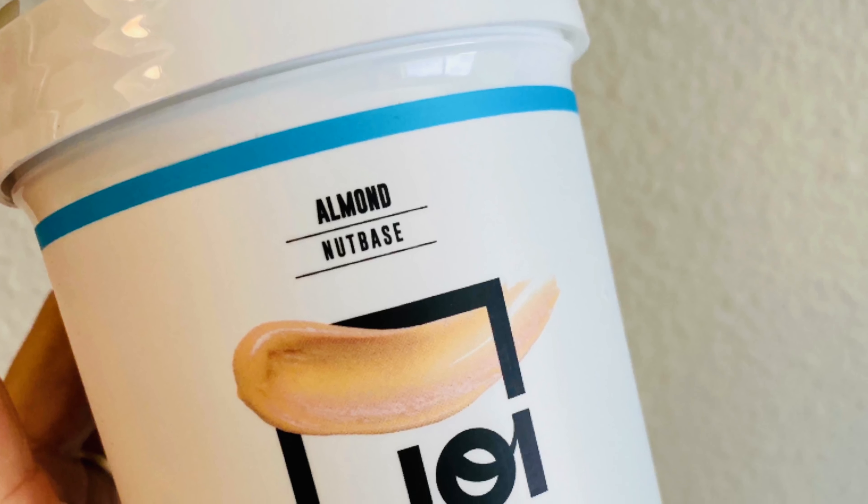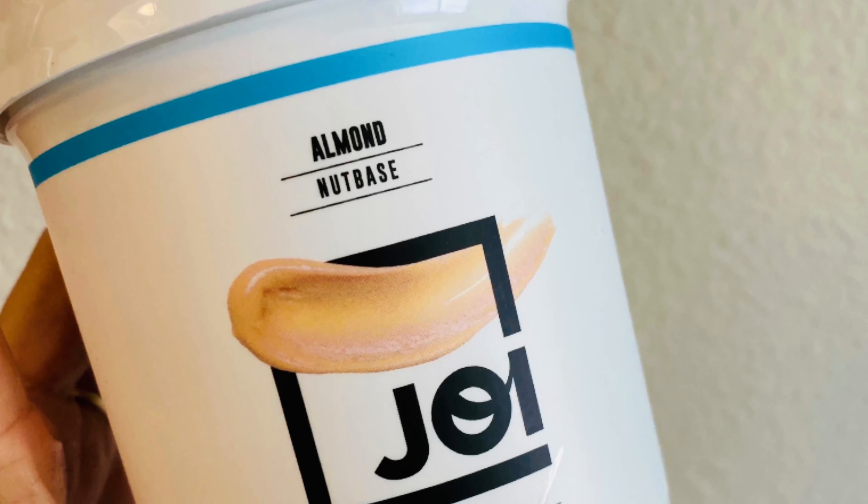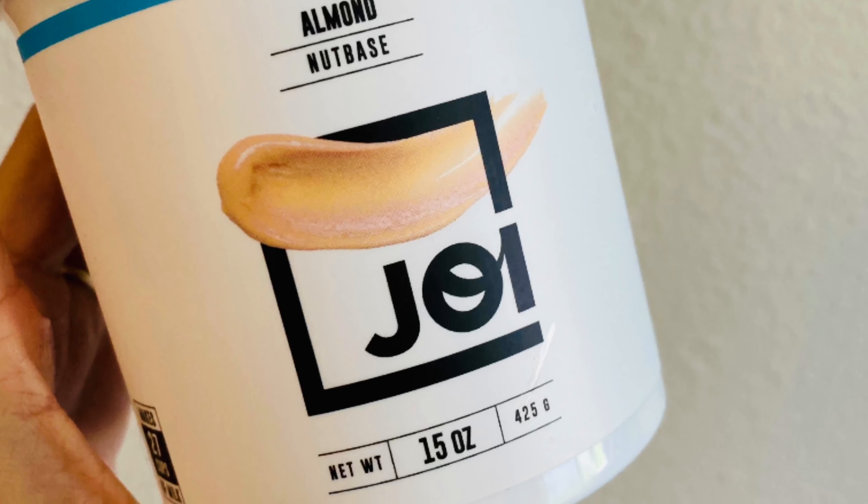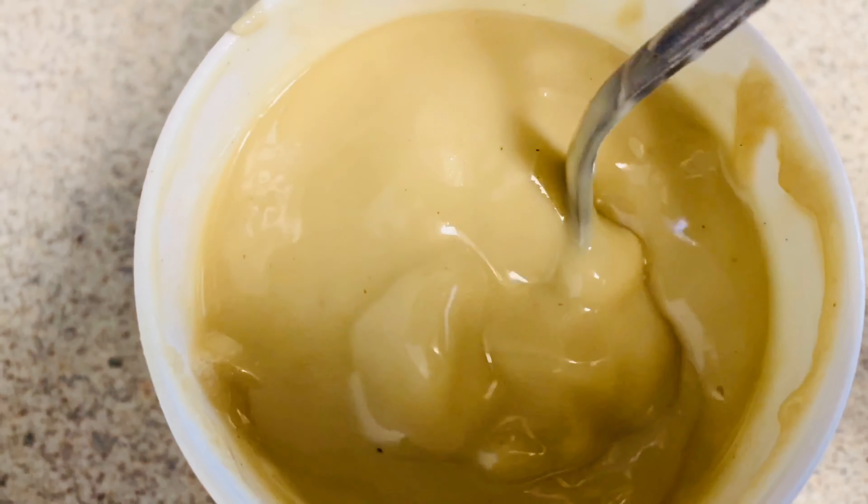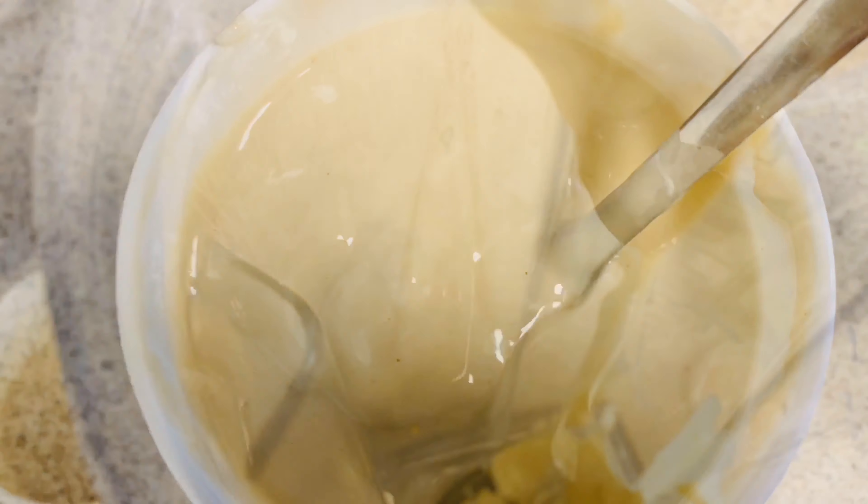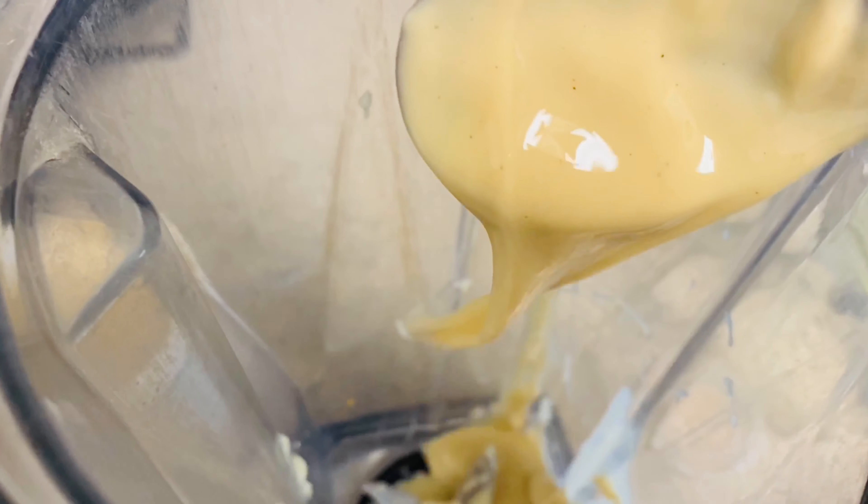Hi guys, I wanted to do this video because I came across the most amazing product by Joy. It is an almond nut base so you can make almond milk conveniently and easily. Here's what it looks like—it's a little bit scary I know, but it's just blanched almonds so it's very clean.